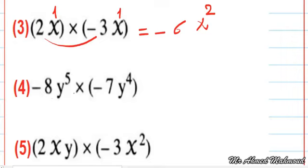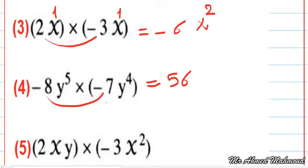Next: negative 8y to the power of 5 times negative 7y to the power of 4. We multiply negative 8 by negative 7 to get positive 56. You can use the calculator. Then y power 5 and y power 4 together — we add their powers to get y to the power of 9.